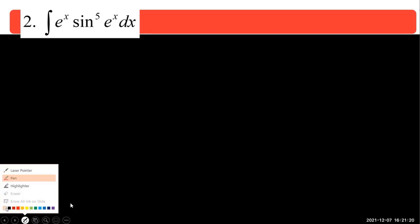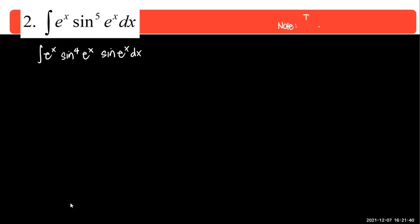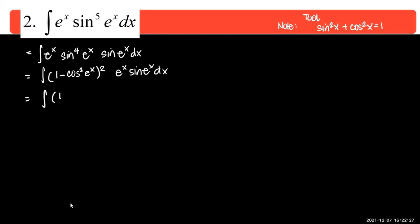Let's go to another example. The rule is to separate a single one and leave the rest. Here we have e to the x times sine raised to the 4 of e to the x times sine of e to the x dx. The tool to use is sine squared x plus cosine squared x equals 1. Since we have sine raised to the 4th, we can write it as (1 minus cosine squared e to the x) squared, then bring the e to the x together.